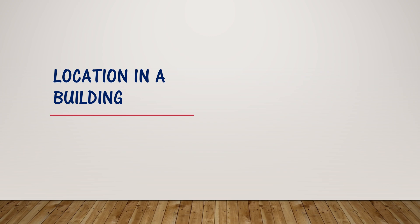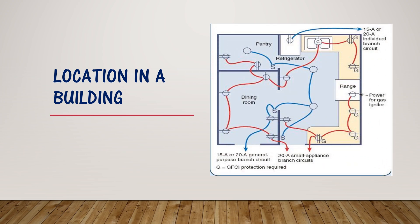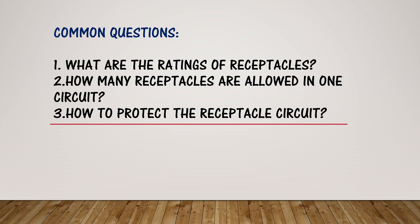Looking at the location in a building on this floor plan, receptacle outlets can be installed in walls, on the floors, in the ceiling, and in the countertop. A countertop is the part of the kitchen above the lavatory.